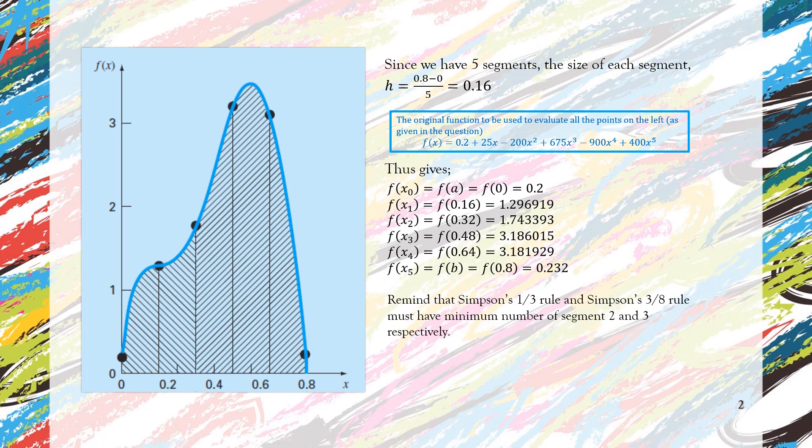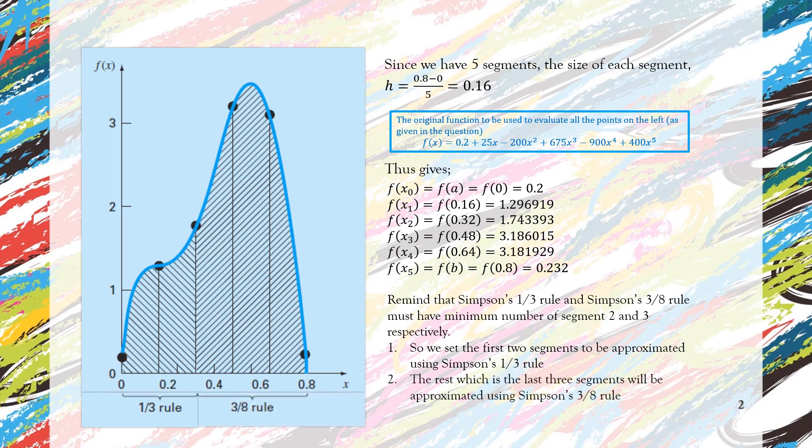Remind that Simpson's 1/3 rule and Simpson's 3/8 rule must have minimum number of segments 2 and 3 respectively. So what we do is the first two segments will be approximated using the Simpson's 1/3 rule, and the rest of the segments, which is three segments, will be approximated using Simpson's 3/8 rule.